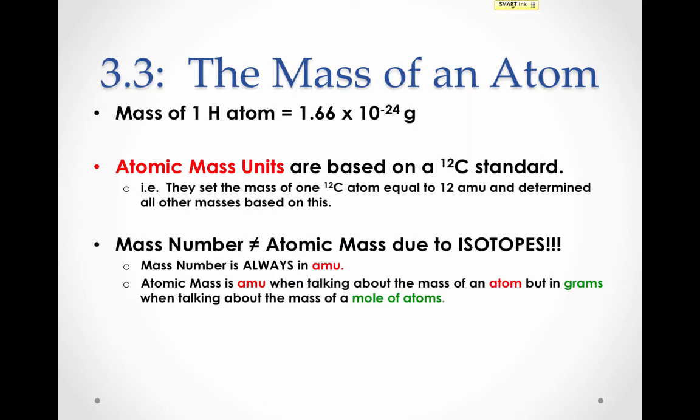The mass number, however, does not equal the atomic mass, because in a sample of atoms there are going to be different isotopes of that element. Since isotopes have different numbers of neutrons, they'll also have different masses. So in any given sample of an element with more than one isotope, each atom will have a slightly different mass depending on how many neutrons it has, or which isotope it is.